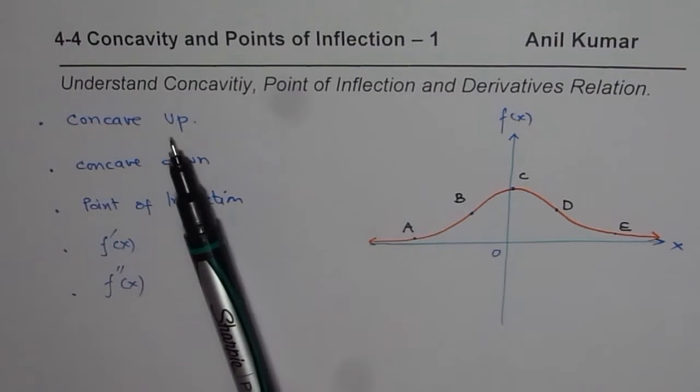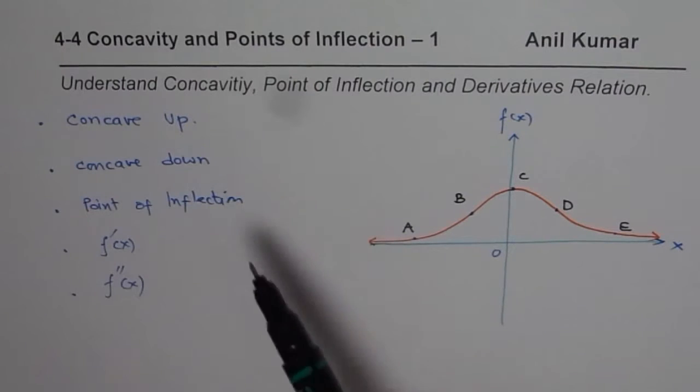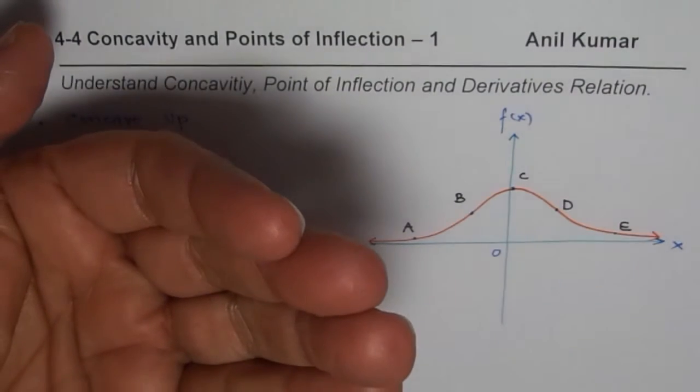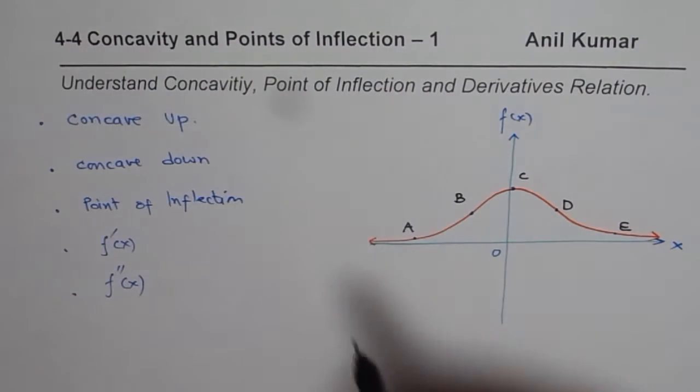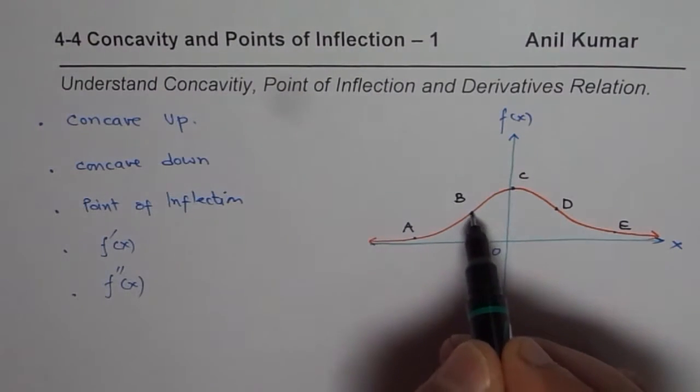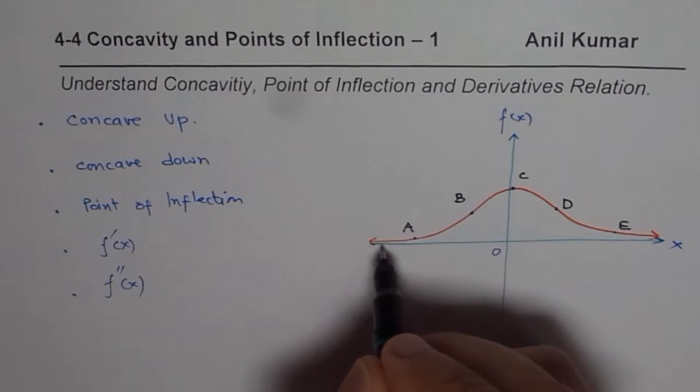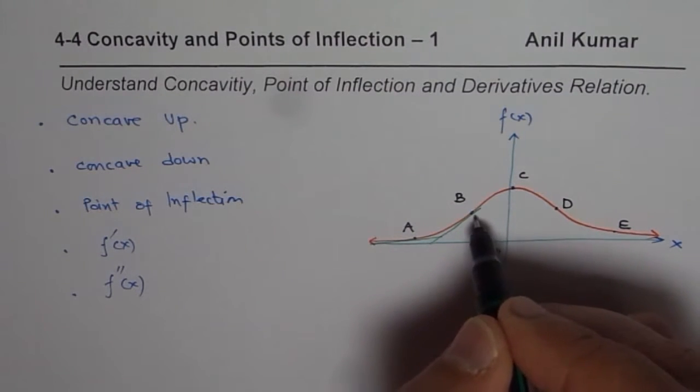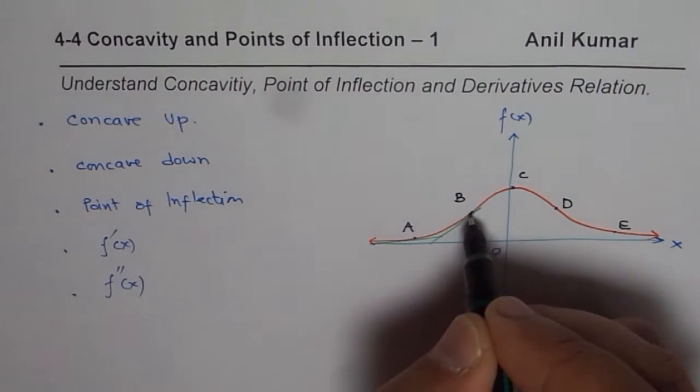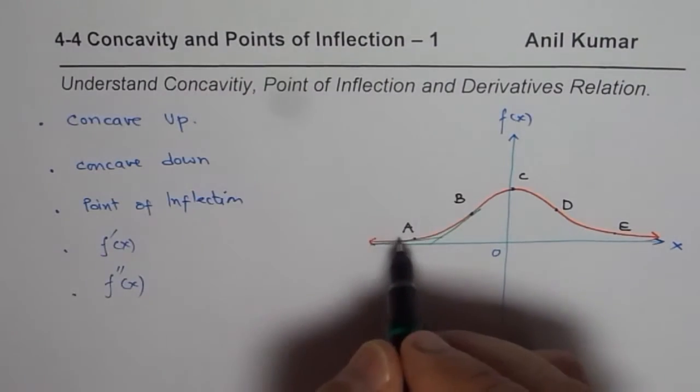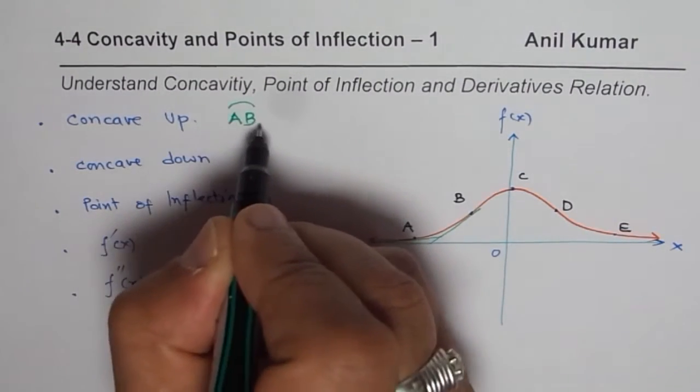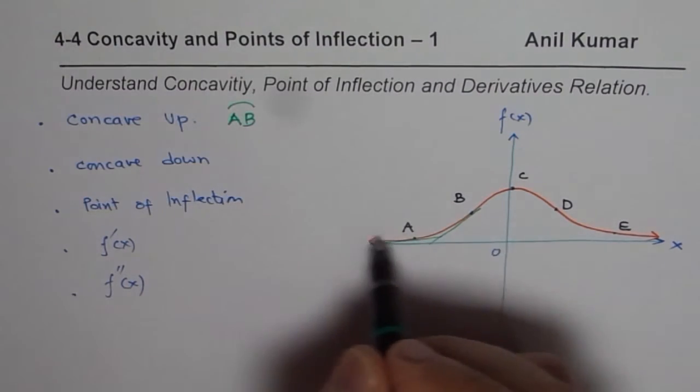First one is concave up. Concave up means if you hold your hand like a cup. So that is concave up. So we see this part is concave up. Second way is draw a tangent. So if you draw a tangent line, the graph of the function is above the tangent, so that makes it concave up. So the portion between a to b, I should say, so the portion between a to b is concave up.